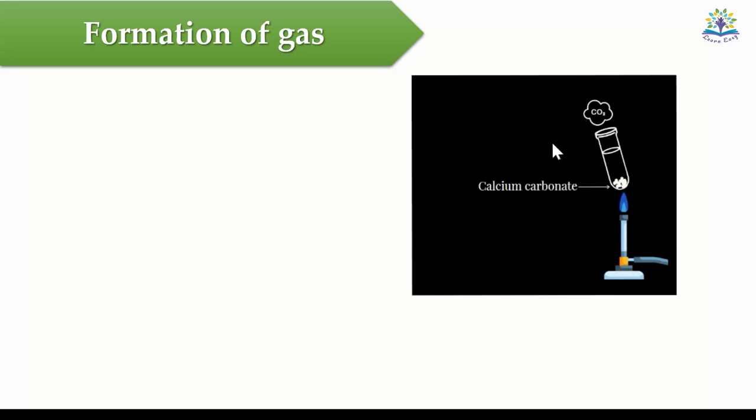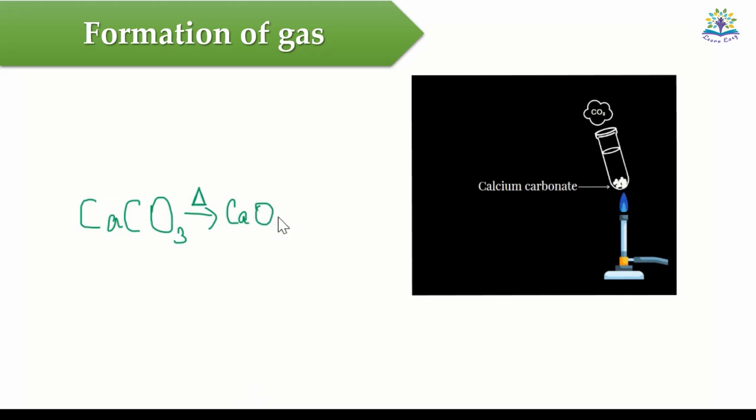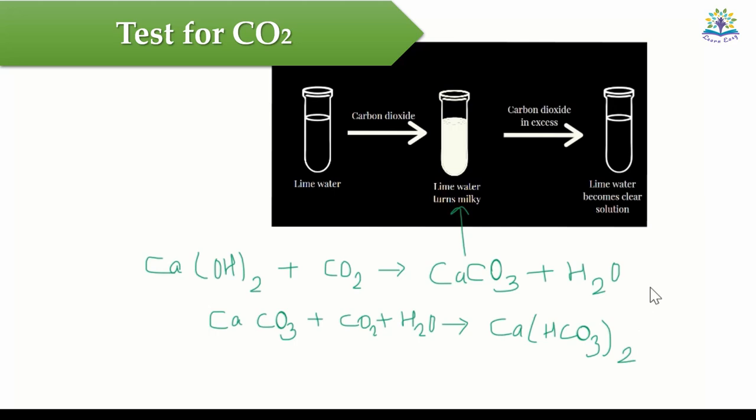Whereas, in some reactions, the production of gas indicates that the reaction has taken place. If we take some solid calcium carbonate and heat it to about 100 degrees Celsius, it decomposes to form calcium oxide and carbon dioxide. We can confirm that the gas formed is carbon dioxide by passing it through lime water. Here, it will turn milky due to the formation of calcium carbonate. But when you pass excess carbon dioxide through it, the solution will turn colorless due to the formation of calcium bicarbonate.